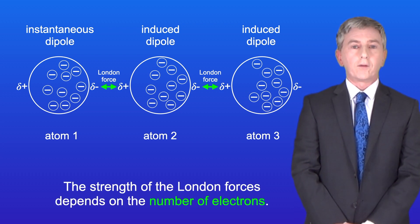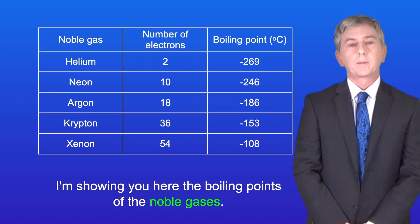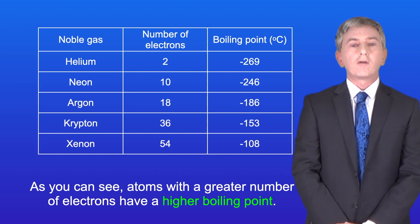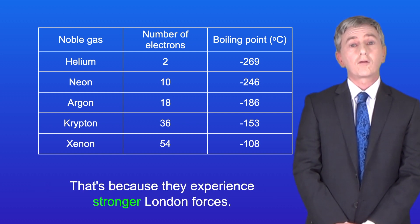The strength of the London forces depends on the number of electrons. I'm showing here the boiling points of the noble gases. As you can see, atoms with a greater number of electrons have got a higher boiling point, and that's because they experience stronger London forces.